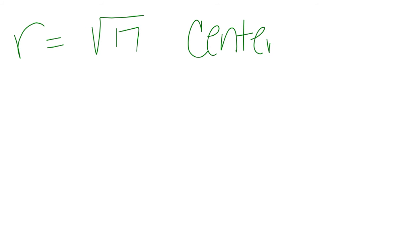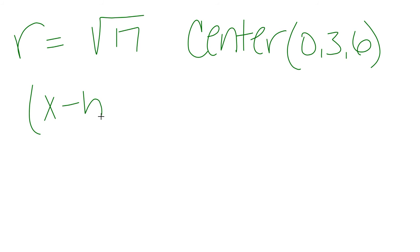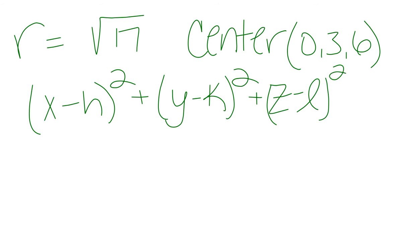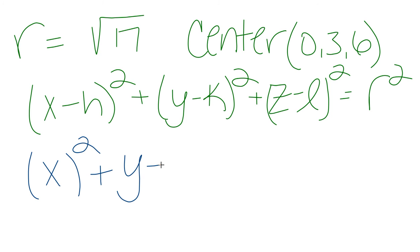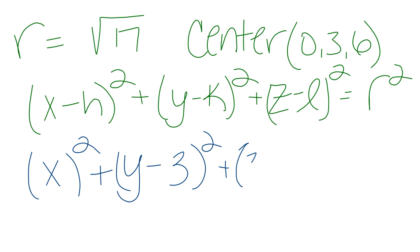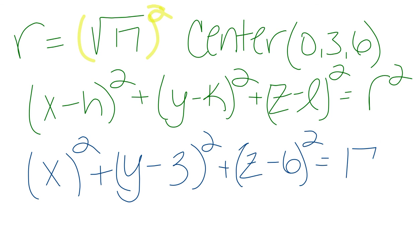So we have a radius of square root of 17 and a center of (0, 3, 6). All we have to do is pop it into the equation: x minus h squared plus y minus k squared plus z minus l squared equals r squared. That gives us x minus zero squared — really just x squared — plus y minus three squared plus z minus six squared equals r squared. Don't mess this up: squaring and square rooting are opposite operations, so when we square the square root of 17, we simply get 17. Final answer: x² + (y − 3)² + (z − 6)² = 17.